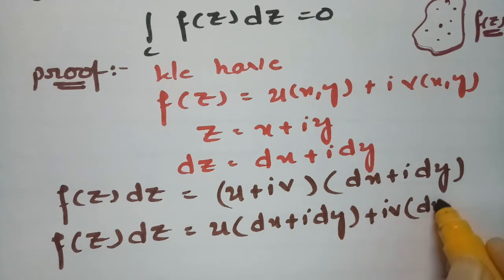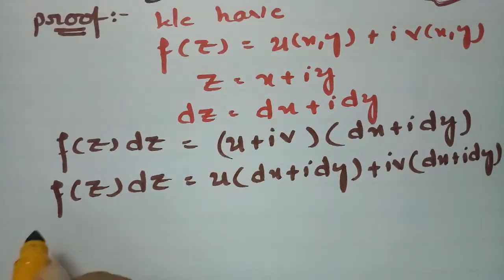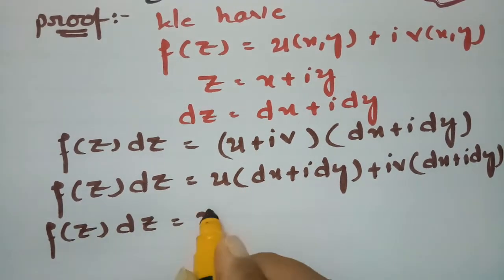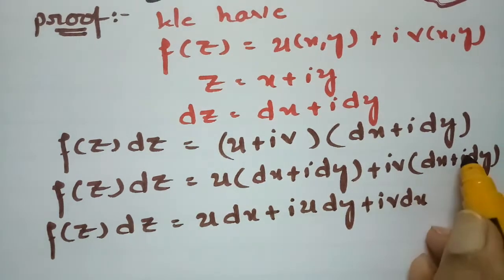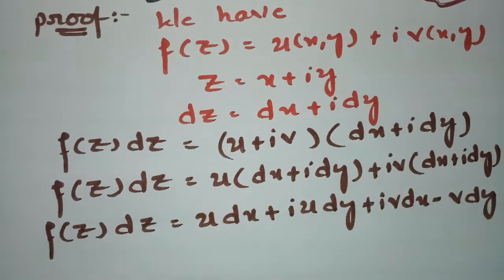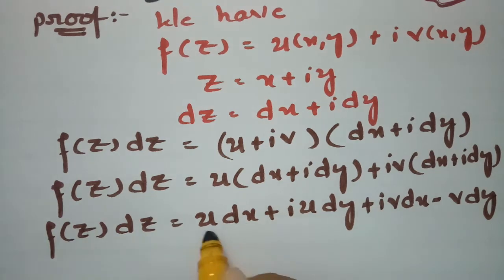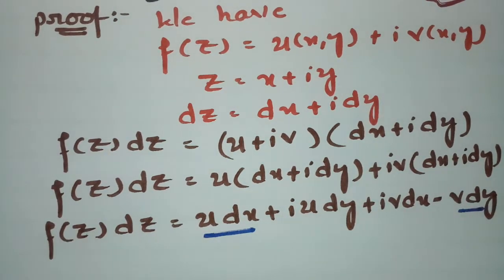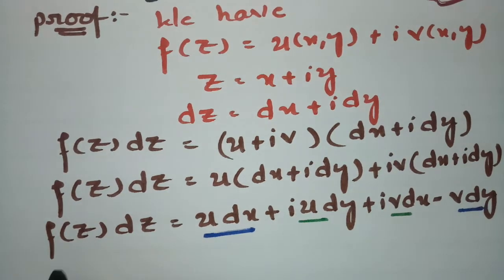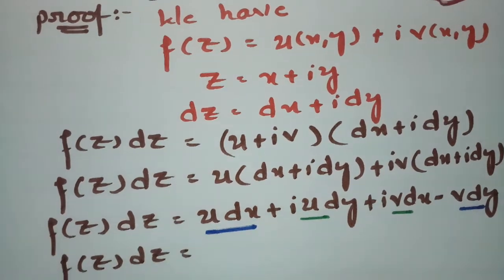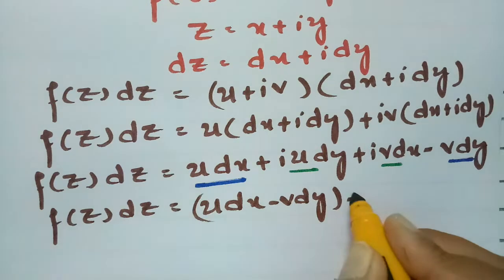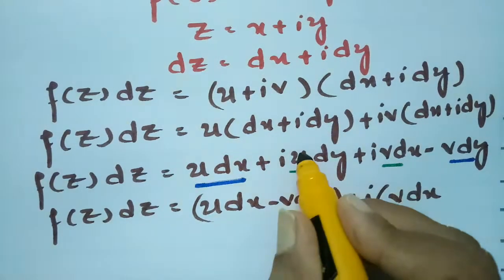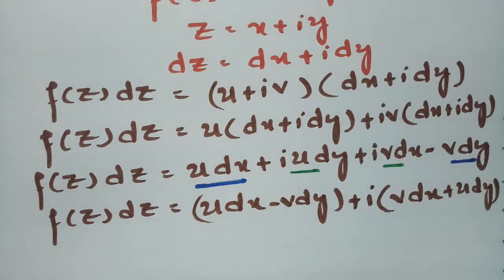Expanding: f(z)·dz = u·dx + i·u·dy + iv·dx + i²·v·dy. Since i² = −1, this becomes u·dx − v·dy + i(v·dx + u·dy). Separating real and imaginary parts: the real part is (u·dx − v·dy) and the imaginary part is (v·dx + u·dy).